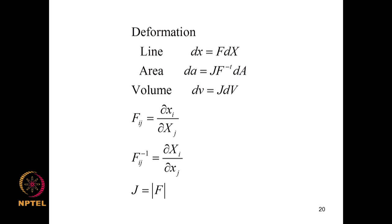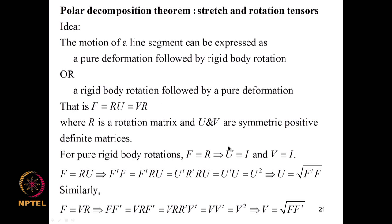A few results are stated without proof. Upon deformation, dX becomes F dX — this we have shown. Similarly, area element and volume element undergo transformation: DA = J F^{−T} dA and dV = J dV₀. FIJ = ∂xi/∂XJ and J is the determinant of F, called the Jacobian. These two results are stated without proof but can be verified with some effort.